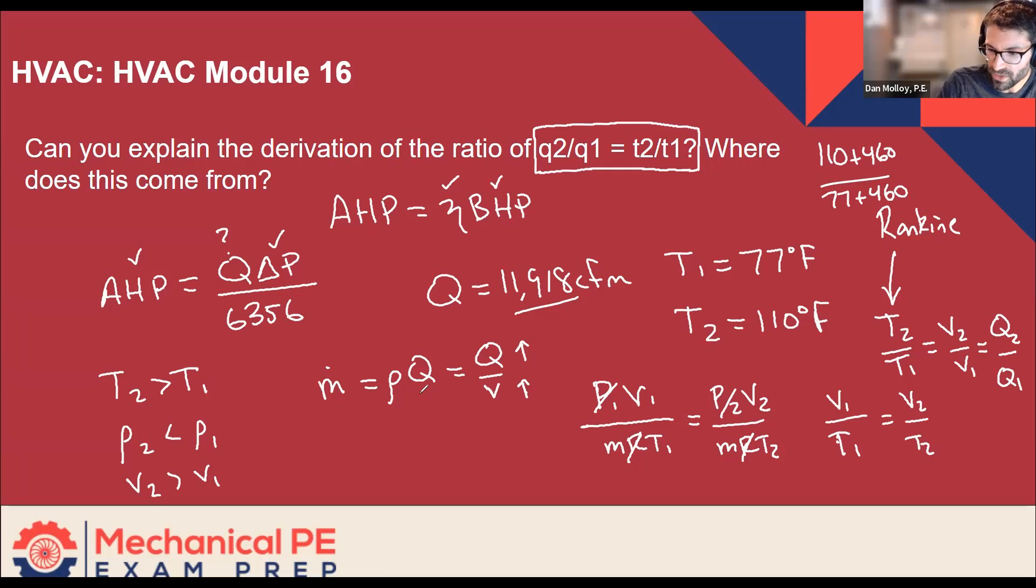So not really a formal derivation there, just kind of a reasoning through. And I don't expect, you know, I don't want anybody to like memorize this or think that this is a formula. All I really expect you to do in this problem is to say, hey, it's a higher temperature. So the volume flow rate is going to be different. It's going to be more or less. It's going to be more. So if you guys were able to get there, then you got it.